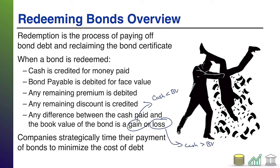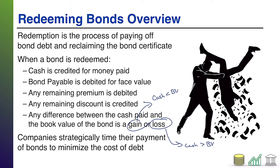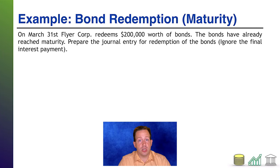Going back to the idea of cost of debt, companies definitely use some strategy when it comes to their long-term debt. They try to time the payment of bonds to minimize the overall cost of debt. They analyze: could we pay off this bond and save some interest? Could we pay off this bond by issuing another bond? Has the market rate shifted enough to make it worth our time to issue more bonds to pay off existing bonds because there'll be a difference in rate, discount, or premium? Companies play this game in order to minimize their cost of debt. Now let's go through an example.